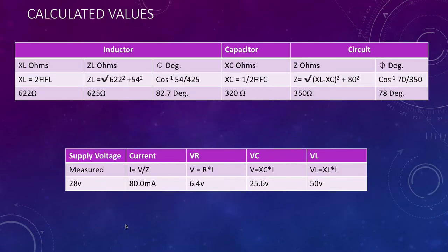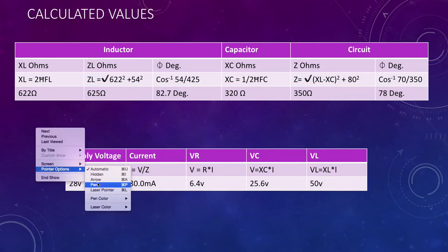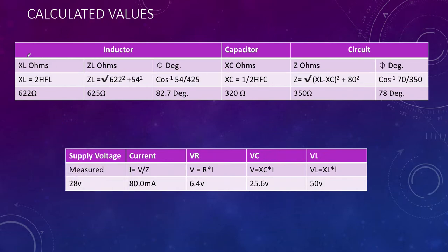With all that information we can actually do some calculations. The first thing we can do is work out what the inductive reactance is in ohms, simply 2πFL. In our case we get about 62 ohms. Your values may come out a little bit different to mine depending on what you're using.